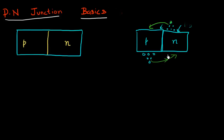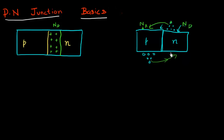Finally we reach a state of equilibrium. Let me explain why this equilibrium happens. When these electrons leave from the N type semiconductor and go to the P type semiconductor, what they leave behind is these positively charged donor atoms. Remember we had donor atoms in the N type and acceptor atoms in the P type. Similarly, when holes jump from the P type to the N type semiconductor, what they leave behind is these negatively charged acceptor atoms.